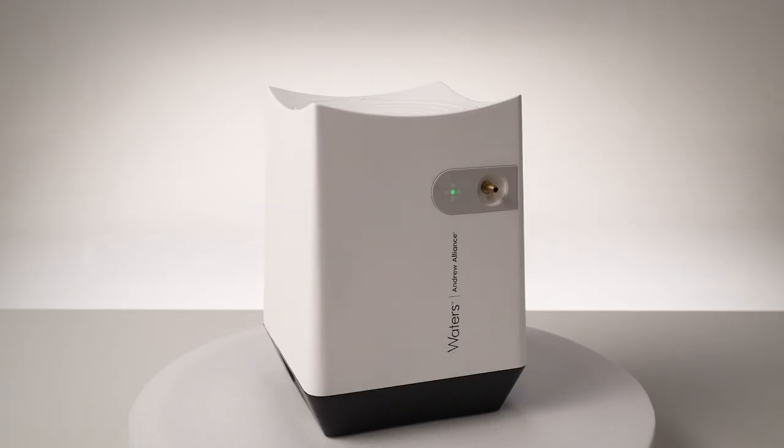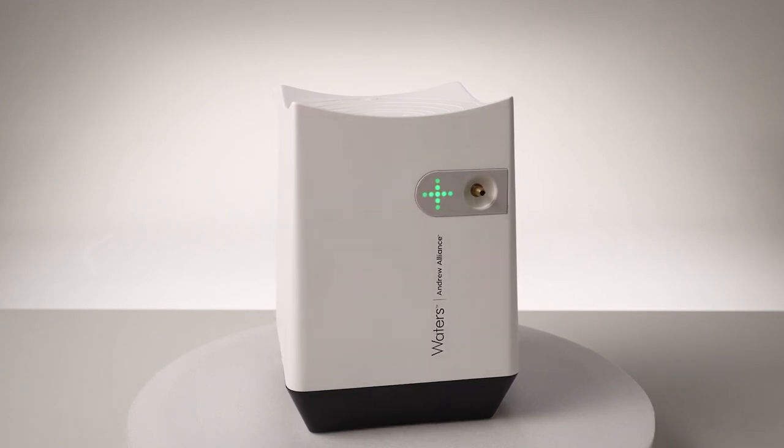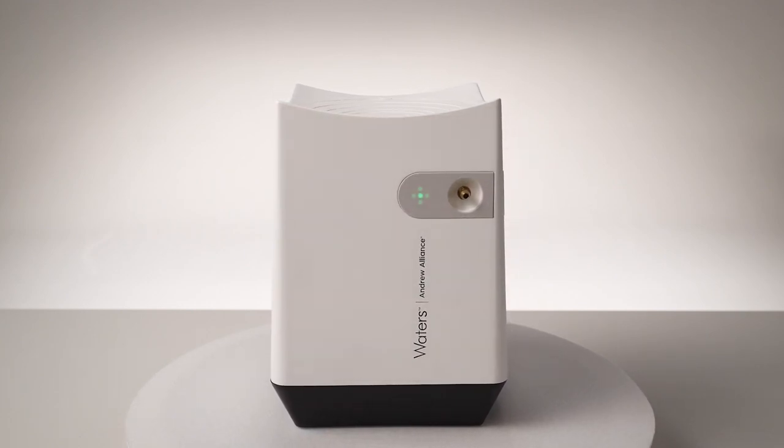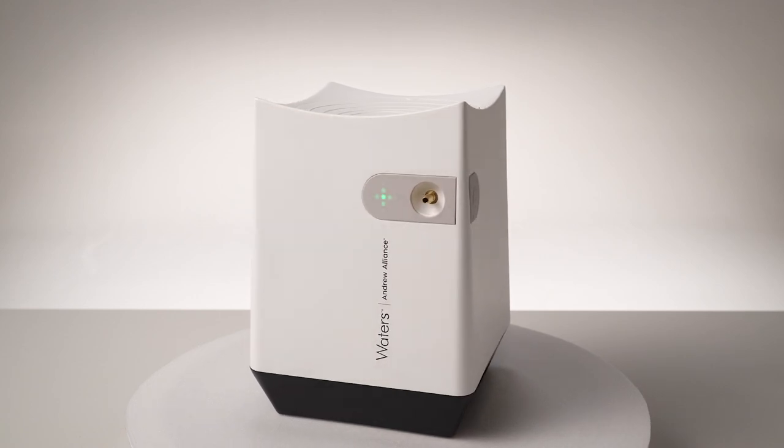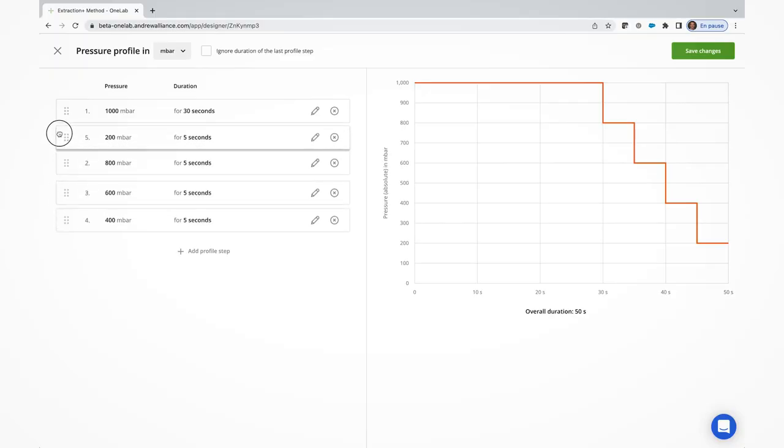Starting with its main components, the device has several key parts. The first is a completely new pump with full connectivity to the OneLab software built right in. This connected pump allows for automated pressure control during a run, enabling a user to program a pressure profile that will be strictly followed during protocol executions without any manual interventions necessary.